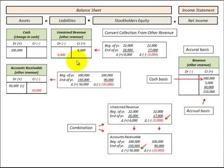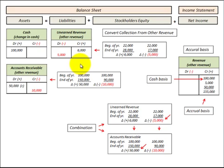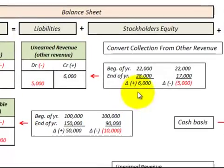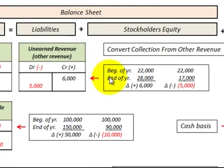Here I'm going to show how to convert from a cash basis to an accrual basis. We're going to do it for our cash sales, revenues other than sales, purchases of inventory and other purchases, and payments for operating expenses. For our examples we're going to look at changes in our accounts here.